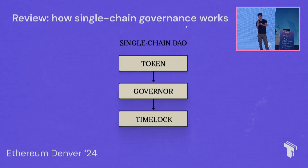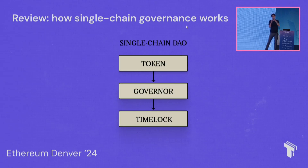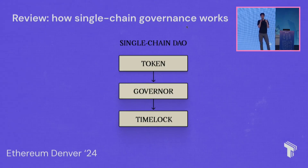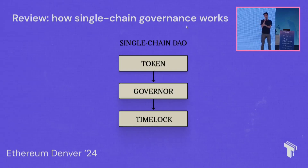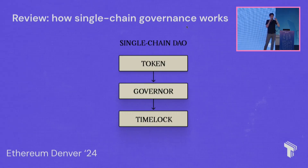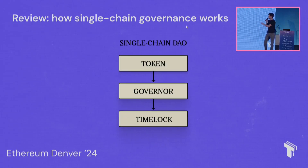A proposal can execute any call that a normal account on Ethereum can execute, which makes these DAOs very generalizable and powerful. The last contract is the timelock contract, which serves two purposes: it's the account of the DAO — holding balances of any assets — and it holds the permissions. If the DAO operates a DeFi protocol or scalability protocol, the admin of that protocol is very likely this timelock contract. Together these three contracts are composable, modular, and standard, with interfaces like Tally playing nicely with this setup.